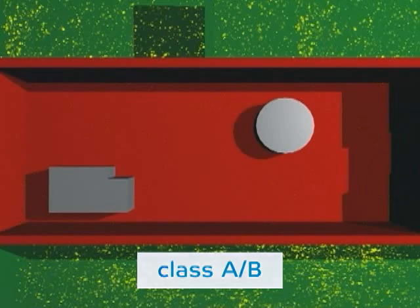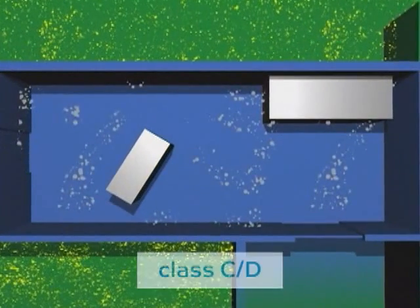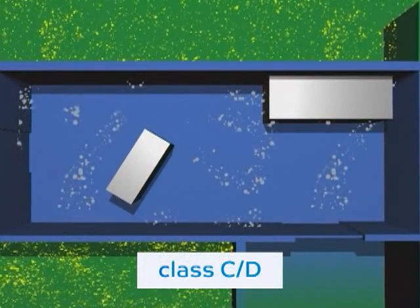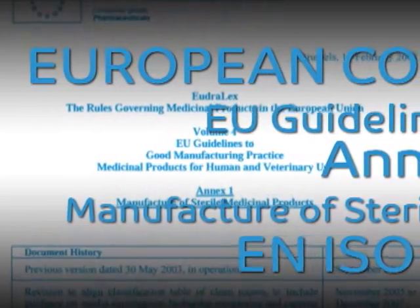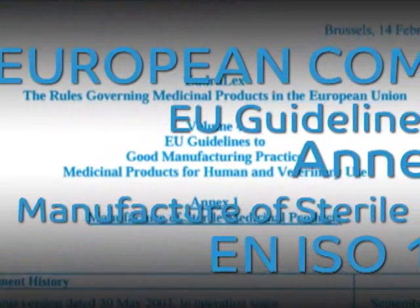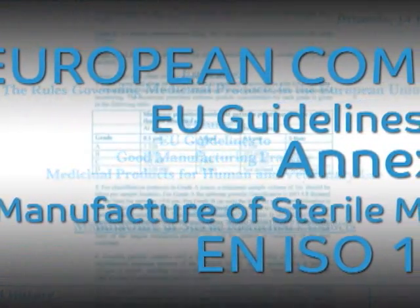This means almost sterile air and surfaces. In classes C and D, highlighted in blue, so-called pathogen reduced conditions are required. Thus, these rooms need to contain fewer microorganisms than normal rooms. Different bacterial count upper limits apply to the individual clean room classes.